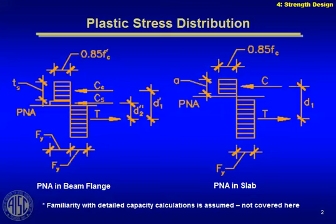The whole basis of composite beam design by the AISC specification — and this is an improvement over the ASD days in the old green spec — it's all based on a plastic stress distribution model, which has turned out to be more economical and resulted in some savings in composite beam construction over earlier editions of the specification going back to the ASD days in the 70s and 80s.